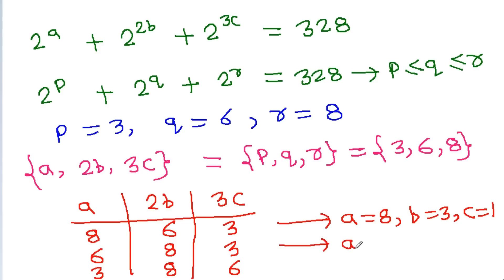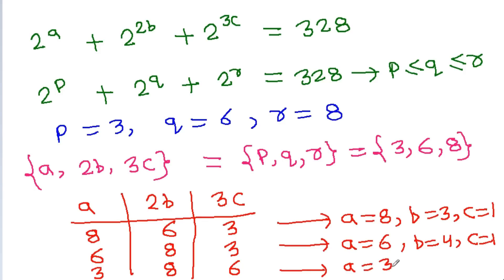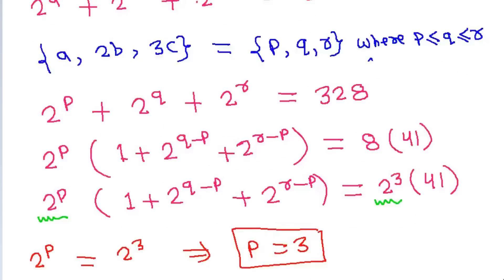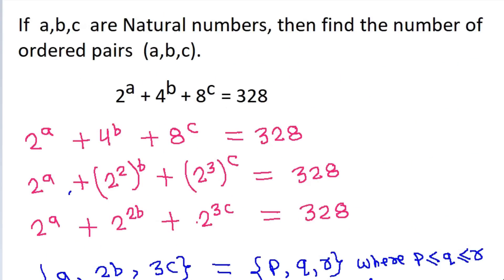From the three cases: (a, b, c) = (8, 3, 1), (6, 4, 1), and (3, 4, 2). Therefore, the number of ordered pairs (a, b, c) is equal to 3.